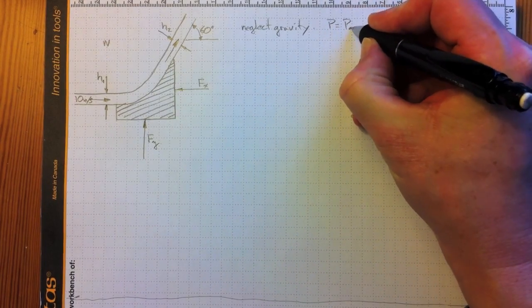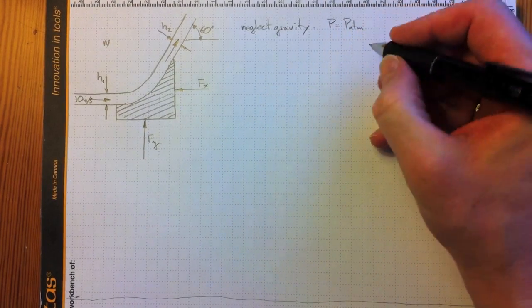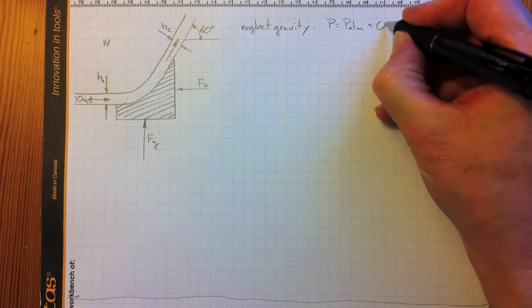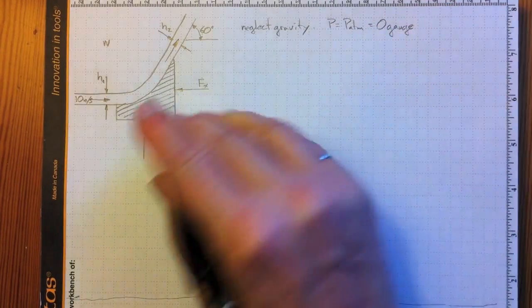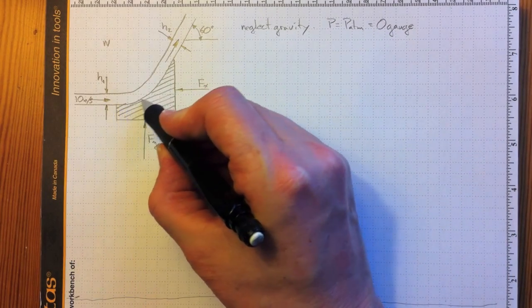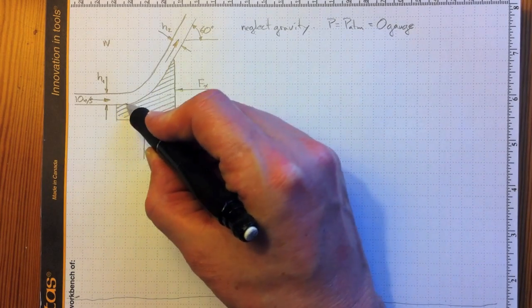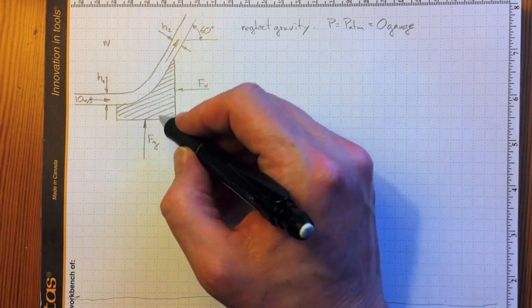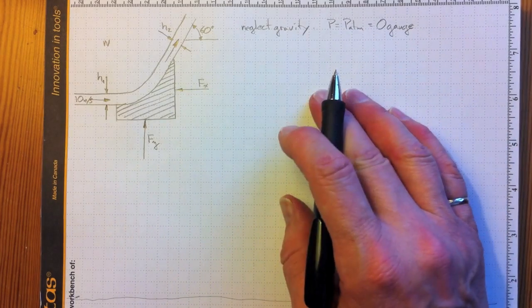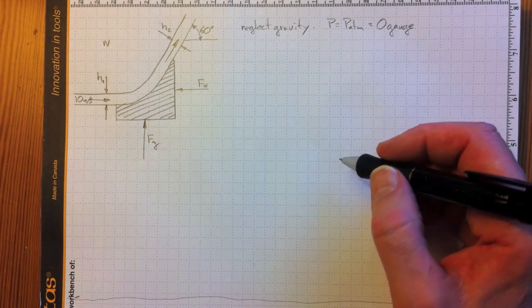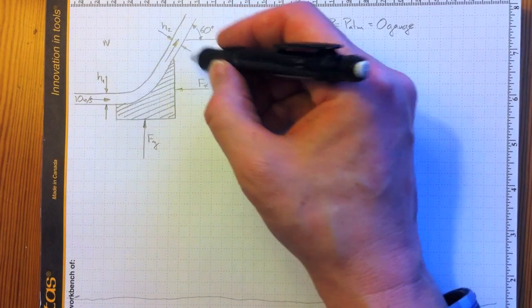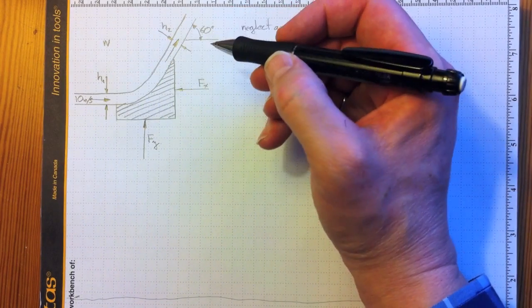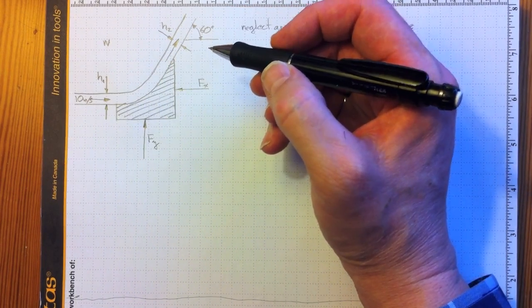Pressure is atmospheric everywhere, so zero gauge makes it easiest for us. Zero gauge everywhere except along this surface, which we'll keep inside the control volume so we don't have to worry about it. So no net pressure forces. Now we need to have a control volume to account for the fluid coming in, the fluid going out, and tracking the momentum that's actually passing across the boundaries.